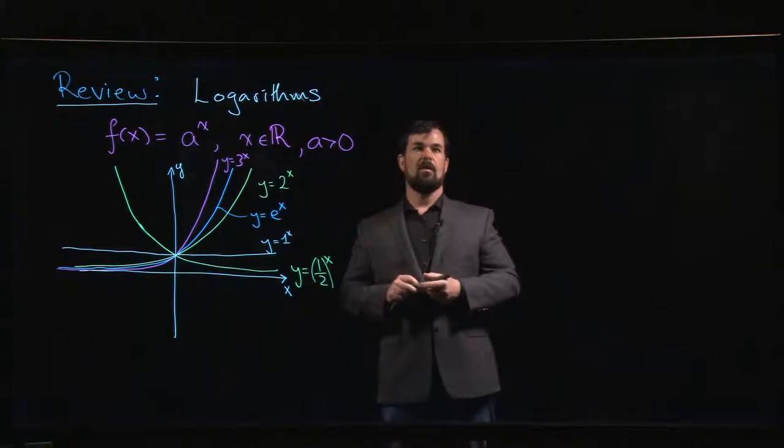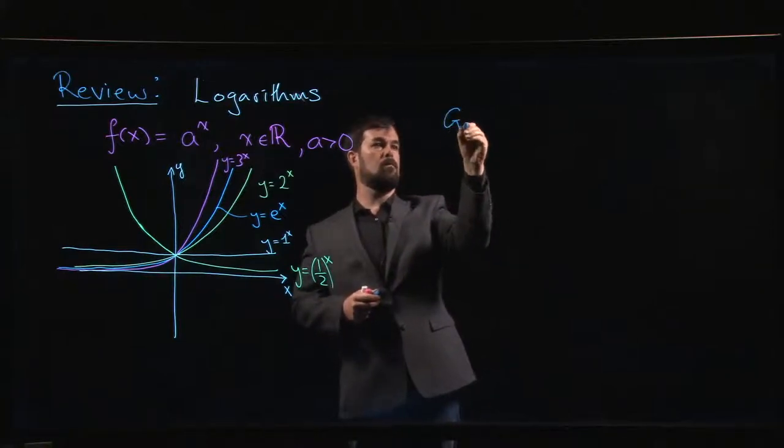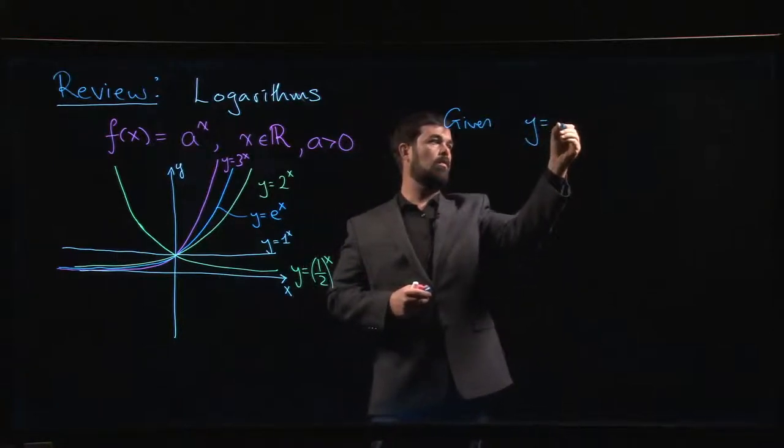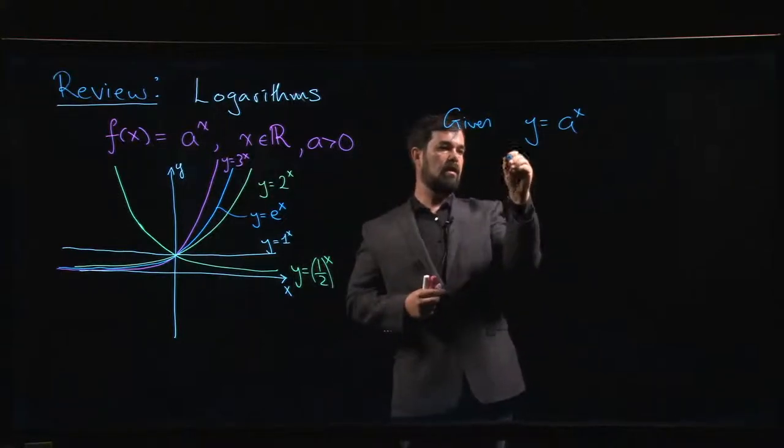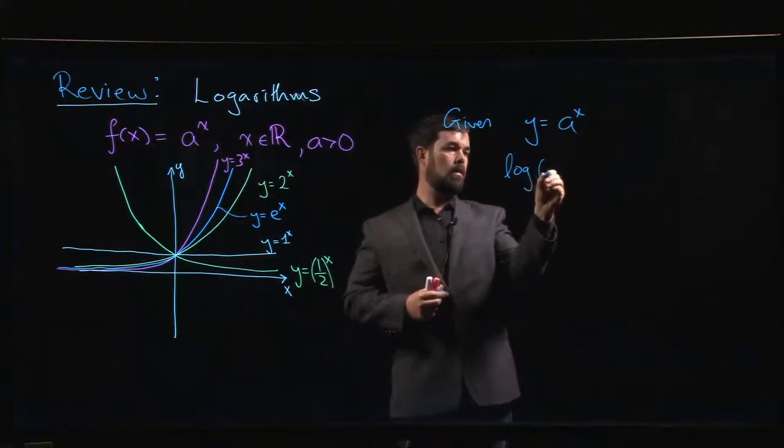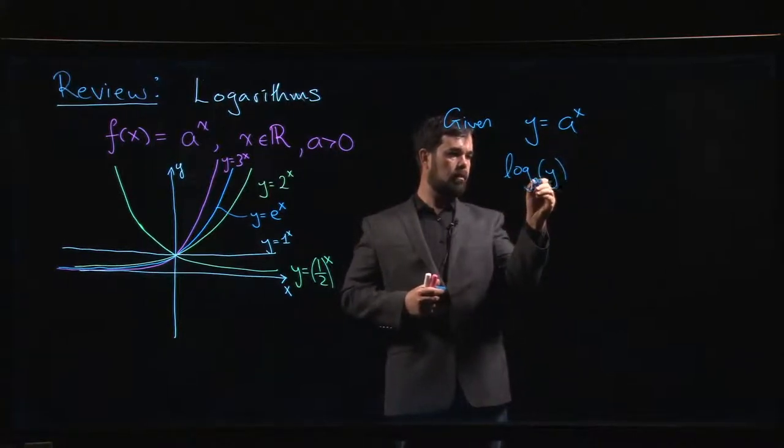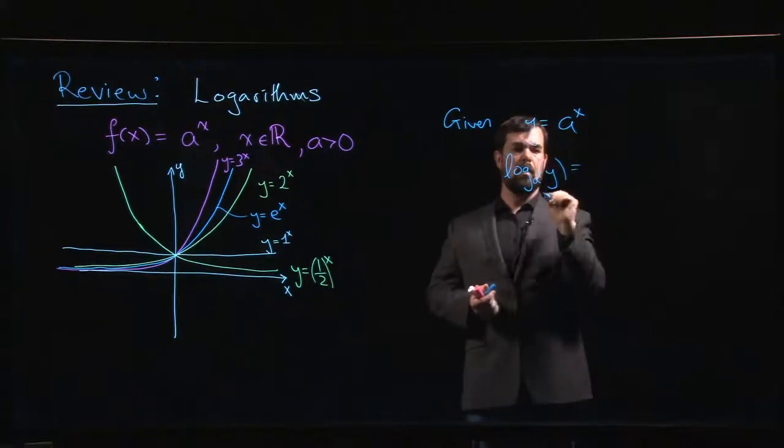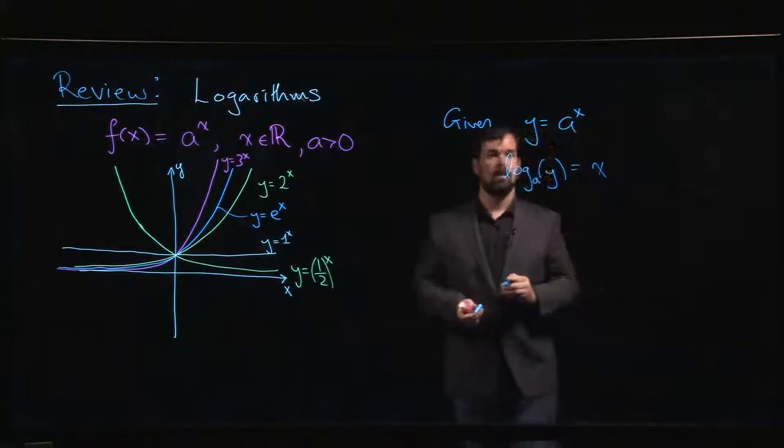So if I give you y equals a to the x, and I want to take the logarithm base a of y, what I get is x. In other words, you have this cancellation property which we know we have in general for inverse functions.